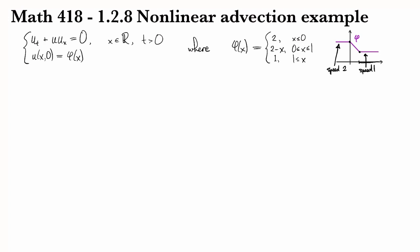So our solution U of x,t is going to be given by, well, it's going to be two when x is less than 2t, and it's going to be one when we're past t plus one. But what happens in the middle when x is between 2t and t plus one?